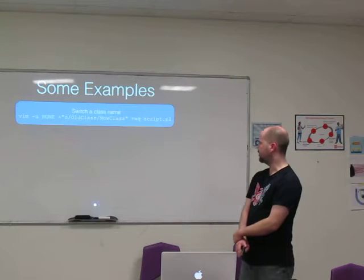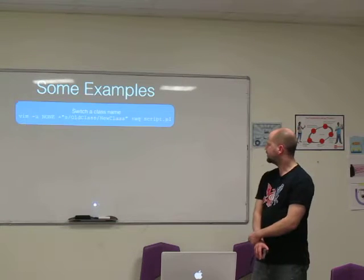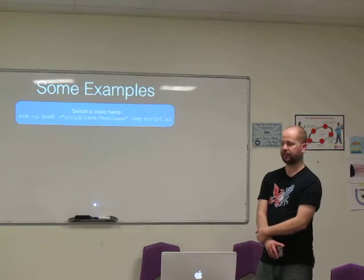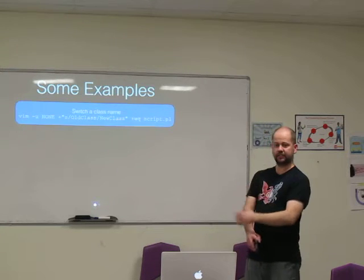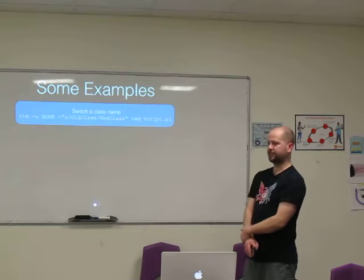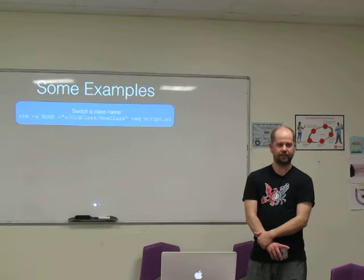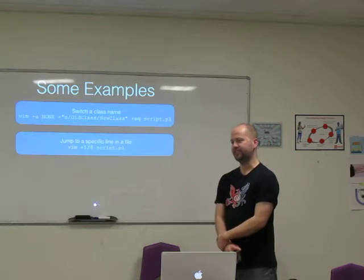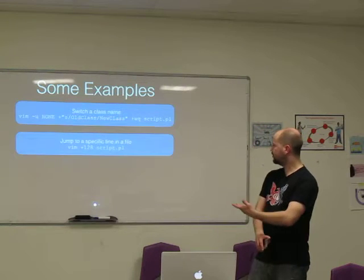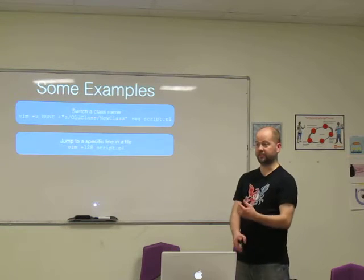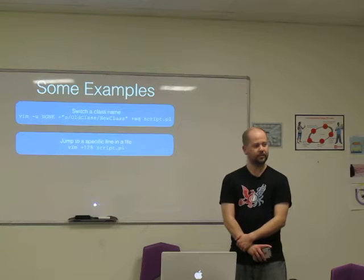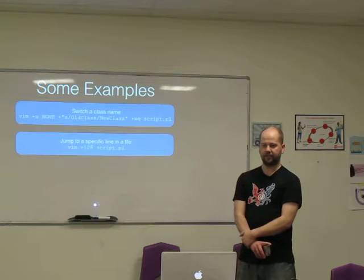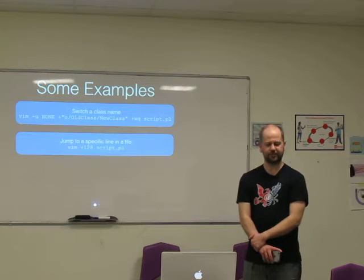I'll close out with a few examples. I should have added /g at the end of that. Basically, this would allow you to skip processing the vimrc because you don't need it for anything, and it will perform the ex command - the search and replace command - to change an old class name into a new class name throughout the file and then save it and exit. So you just turn it into a sed-like tool. One interesting ex command that isn't commonly thought of as an ex command is just a number, which means jump to this line number. So if you have an error message that says error on line X in the file, you can open the file up and jump straight to that line.